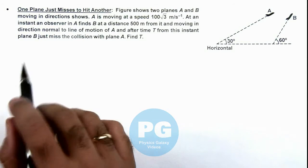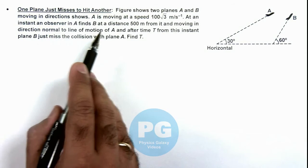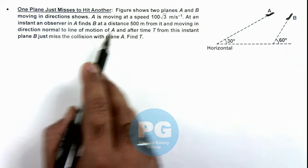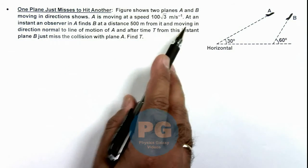This illustration is about a plane just missing to hit another one. Here the figure shows two planes A and B moving in directions shown.